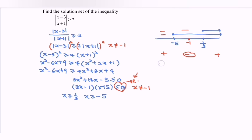So the answer would be x such that x greater equals to negative 5 less than negative 1, or x greater than negative 1 less than equals to 1 over 3. So that is the solution set.